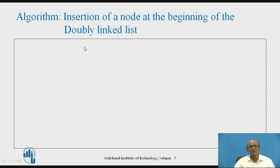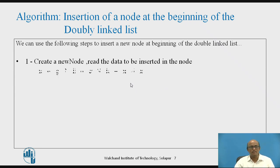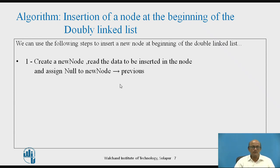This is the algorithm for insertion of a node at the beginning of the doubly linked list. Step one: create a new node and read the data from the user to be inserted. Assign null to the new node's next and previous pointers, because it will be the first node. So the previous pointer is set as null: new_node->next = NULL and new_node->previous = NULL.